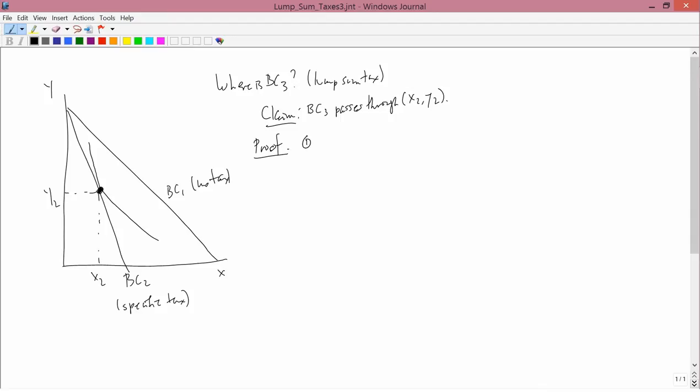Step 1: What is BC2? The answer is, it's income equals expenditure under the specific tax. The expenditure is the amount of money you give the shopkeeper when you buy X, the amount of money you give the government when you buy X, and the amount of money you pay for Y.